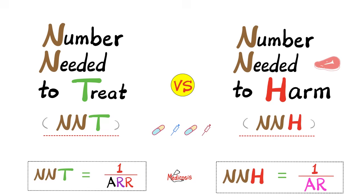We covered sensitivity versus specificity, positive predictive value versus negative predictive value, positive likelihood ratio versus negative likelihood ratio, incidence versus prevalence, reliability versus validity, consistency versus accuracy. After that, we talked about absolute risk reduction versus relative risk reduction, and absolute risk reduction versus attributable risk. The reciprocal of the absolute risk reduction is the number needed to treat, and the reciprocal of the attributable risk is the number needed to harm.